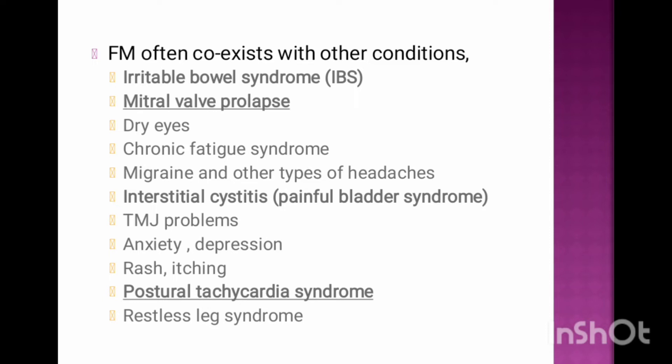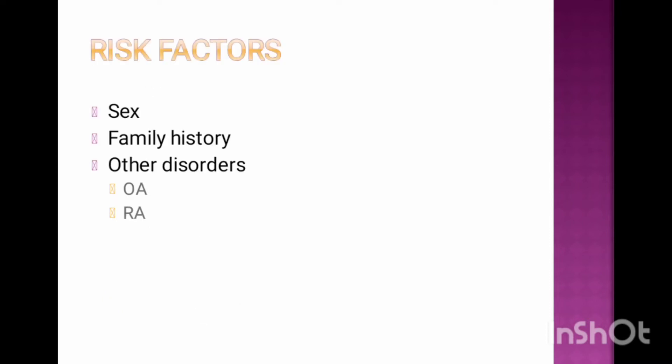Also associated: Orthostatic Tachycardia Syndrome and Restless Leg Syndrome. Risk factors associated with fibromyalgia include: 1. Sex — fibromyalgia is diagnosed more often in women than in men. 2. Family history — you may be more likely to develop fibromyalgia if a parent or sibling also has the condition. 3. Other disorders such as osteoarthritis, rheumatoid arthritis, and lupus may increase your likelihood of developing fibromyalgia.